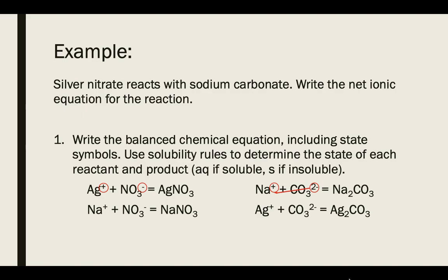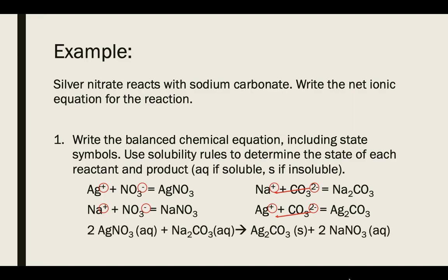This is a double replacement reaction, so silver and sodium switch places. When sodium forms a compound with nitrate, sodium's positive 1 and nitrate's negative 1 charges balance, giving the formula NaNO₃. When silver bonds to carbonate, silver's positive 1 and carbonate's negative 2 do not balance, so we crisscross again, placing a subscript of 2 after silver. The correct formula for that product is Ag₂CO₃. Coefficients of 2 were placed in front of the silver nitrate reactant and the sodium nitrate product to balance the equation.